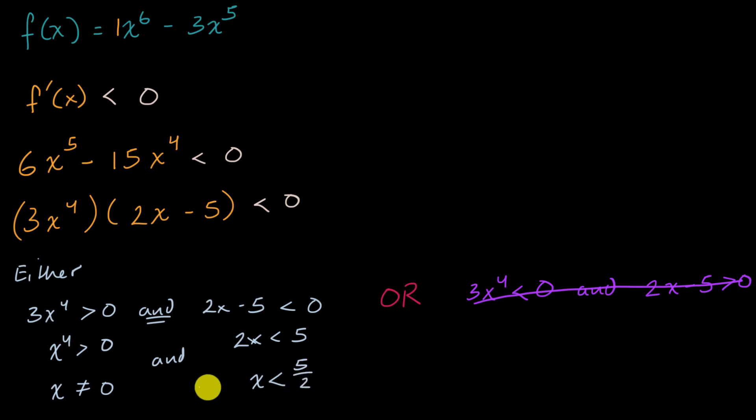So it might be tempting to say, all right, the intervals that matter are all the x's less than five halves, but x cannot be equal to zero. Now, is that the entire interval where our function is decreasing? Well, let's think about what happens at zero itself.